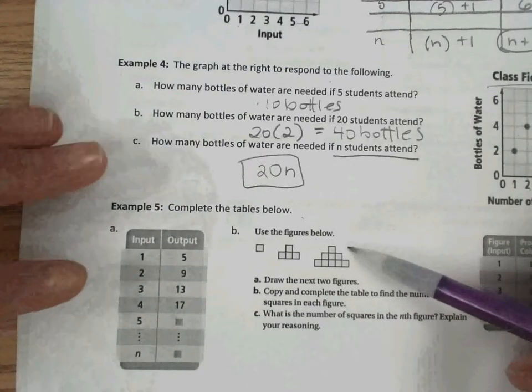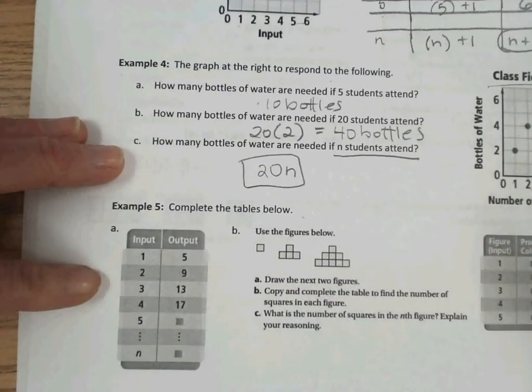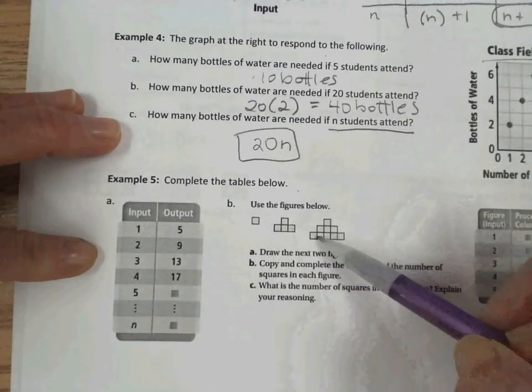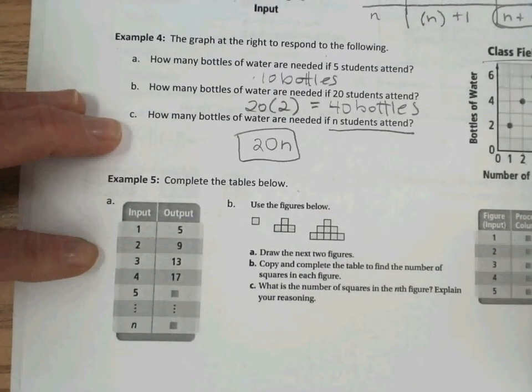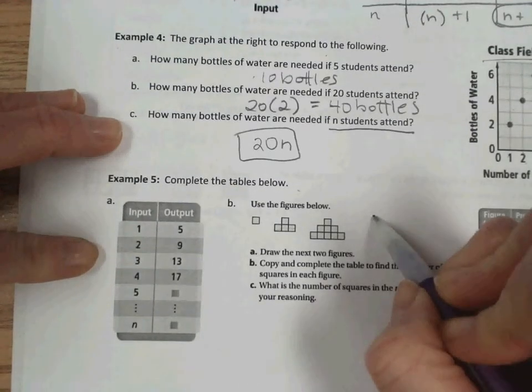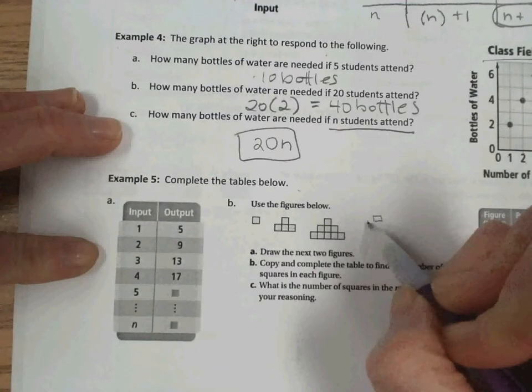And complete the tables below. So we're going to use the figure here. And you can see the pattern establishing of adding a row for each new figure. It says, draw the next 2 figures.